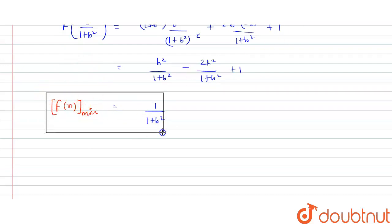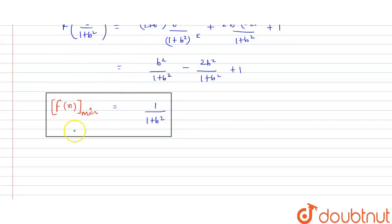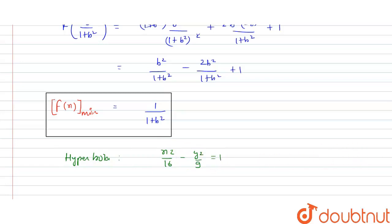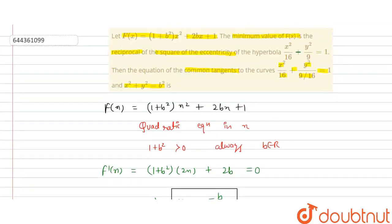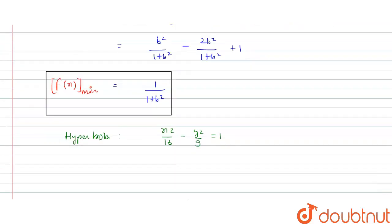This is the minimum value of f(x). Now a hyperbola is given in the problem. The hyperbola equation is x²/16 - y²/9 = 1. This is the value given in the question. So first we find the eccentricity of the hyperbola.